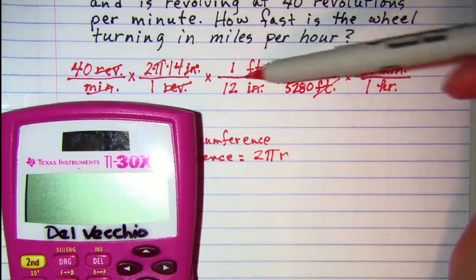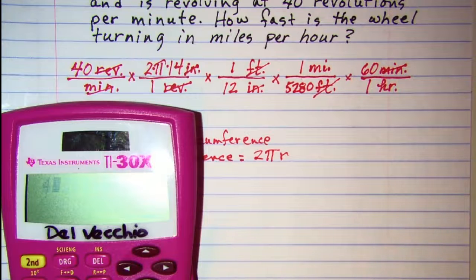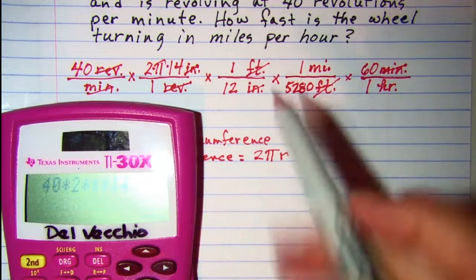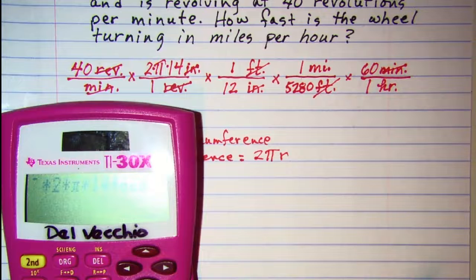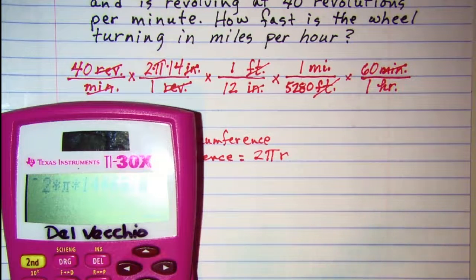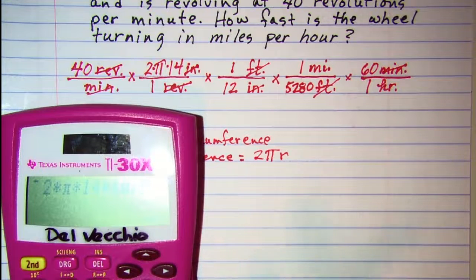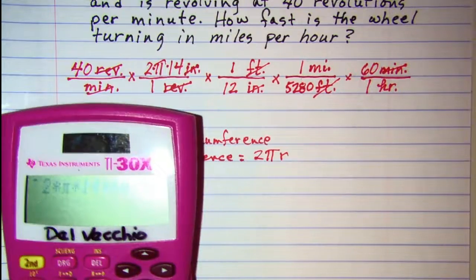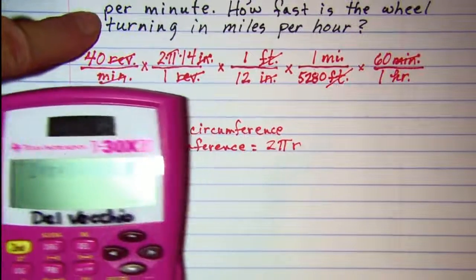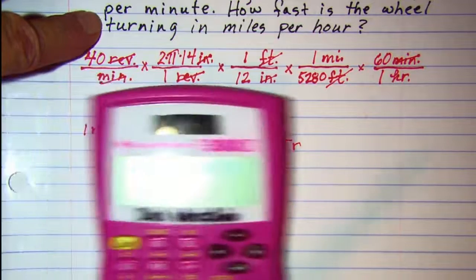So 40 times 2 times π times 14 times 60 and then divided by. And now whenever you have a number of things in your denominator you need to open your parentheses. So I have all of those numerators divided by and then the parentheses will open up the denominator.